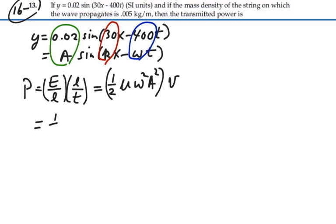This is going to be one-half times mu, 0.005, times omega, which we identify as 400, times the amplitude, which is 0.02 squared.